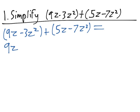we have 9z plus 5z minus 3z squared minus 7z squared. Notice how we've grouped together the terms containing z on the left and the terms containing z squared on the right.